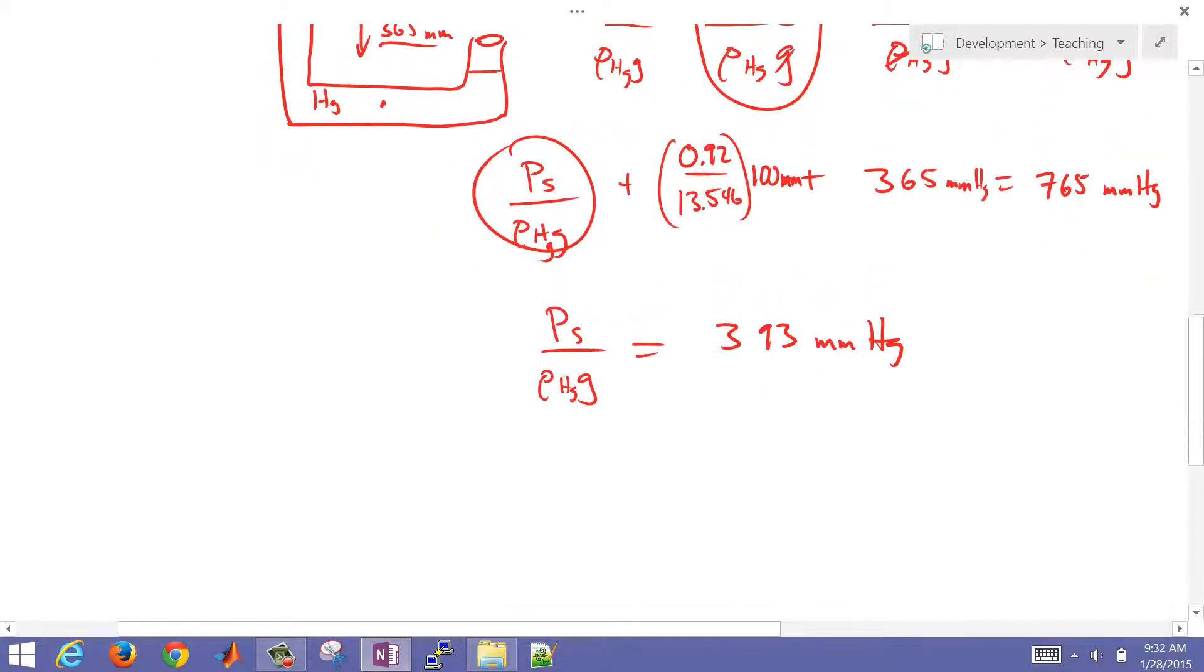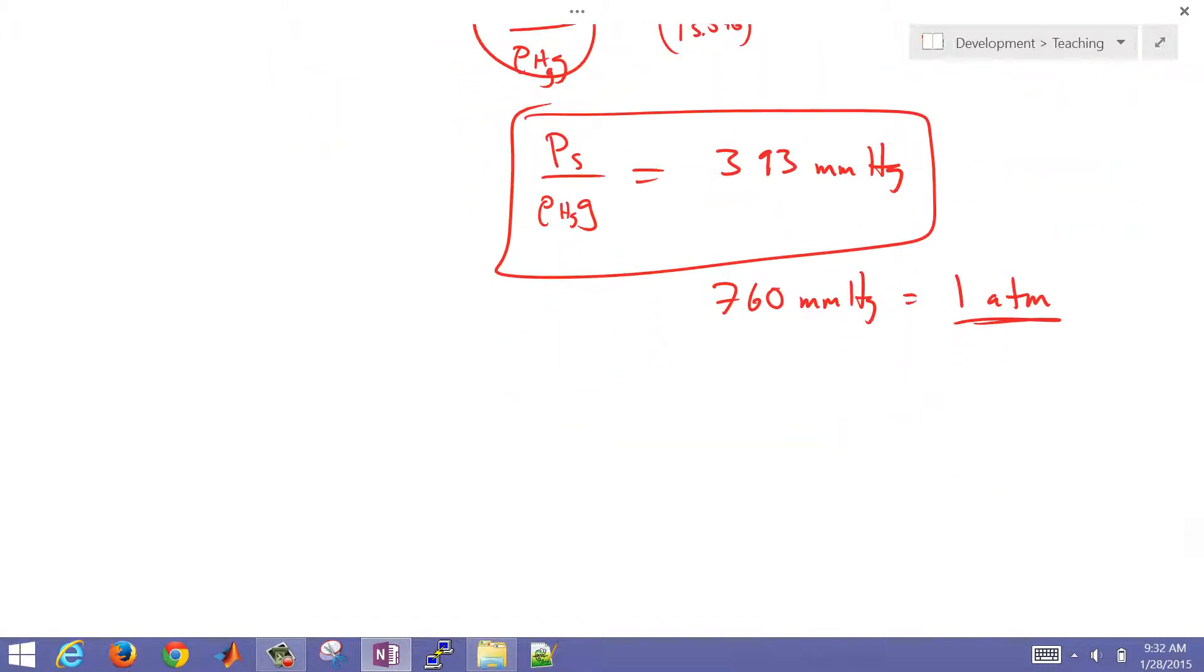We have a conversion here: 760 millimeters of mercury equals one atmosphere. So we can convert it from a head form to an atmospheric form. That's going to be equal to 1.01 bar, and that's also going to equal 14.7 pounds per square inch. Now that would be an absolute versus a gauge.